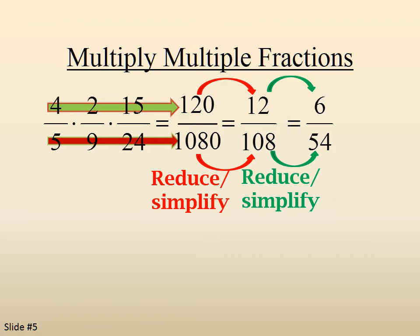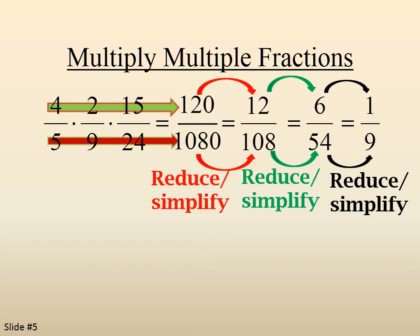Dividing by 2 gives us 6 over 54. And one more time, they're both divisible by 6, so we're down to 1 over 9. Not too bad, as long as you liked multiplying 9 times 5 times 24.